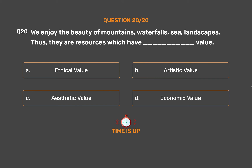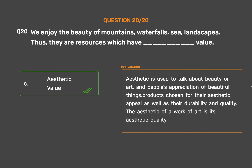The correct answer is Option C: Aesthetic value. Aesthetic is used to talk about beauty or art, and people's appreciation of beautiful things — products chosen for their aesthetic appeal as well as their durability and quality. The aesthetic of a work of art is its aesthetic quality.